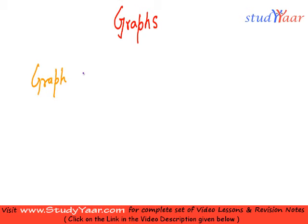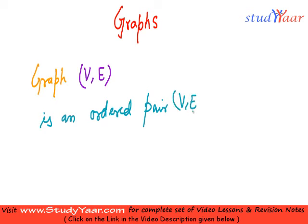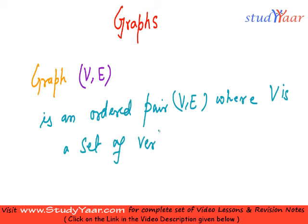We say that graph is an ordered pair V, E. It is an ordered pair V, E where V is a set of vertices. Vertices are just points.